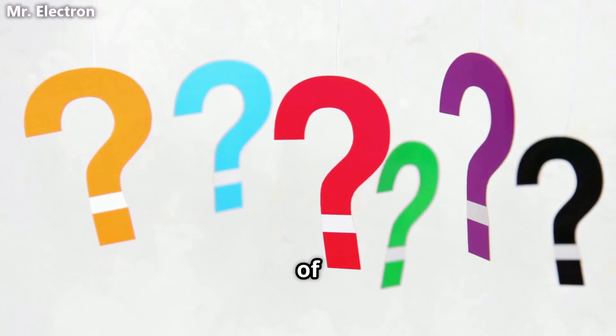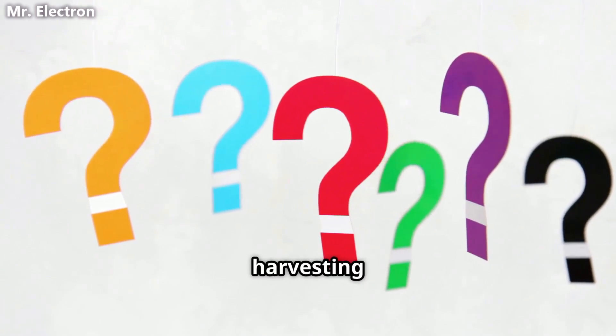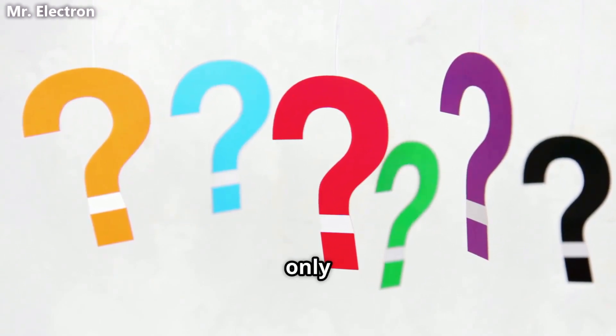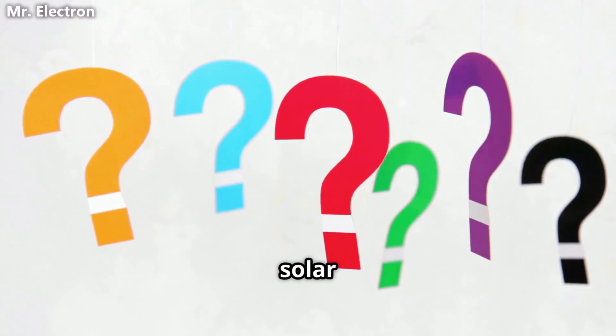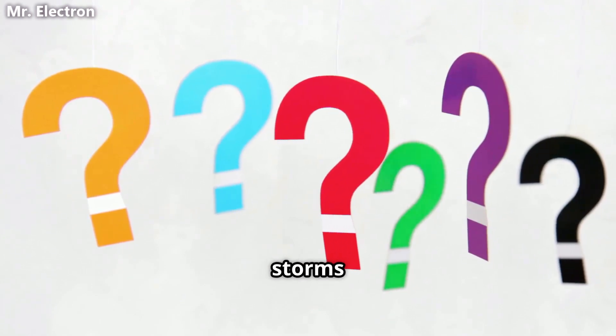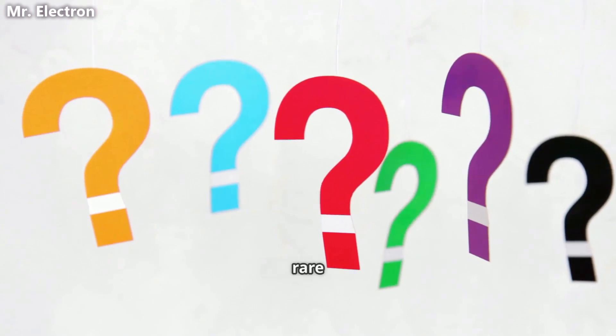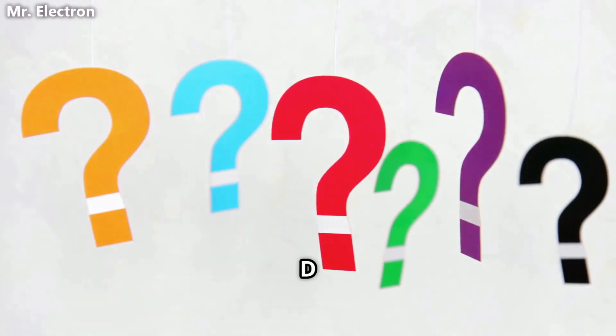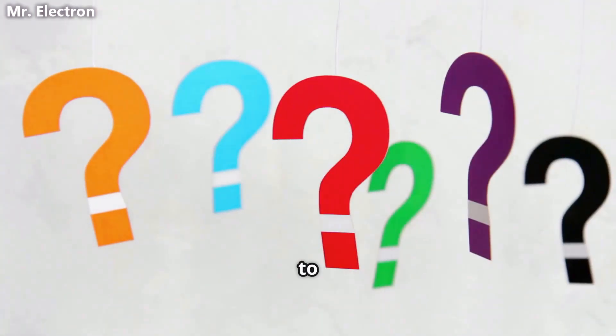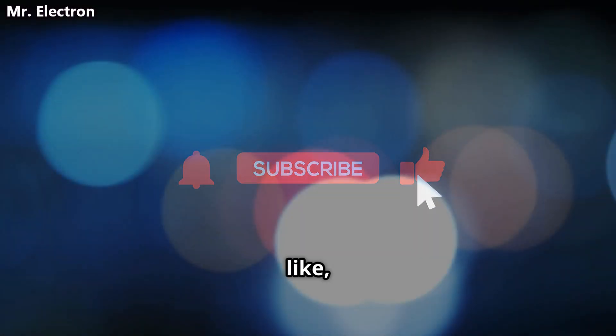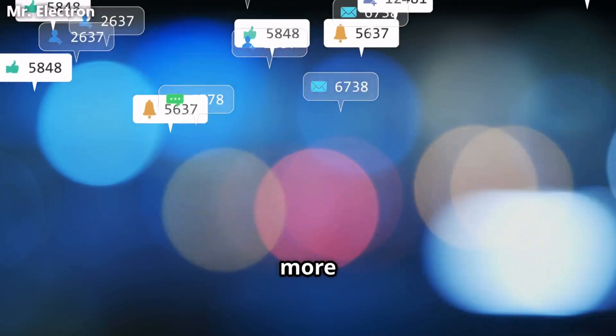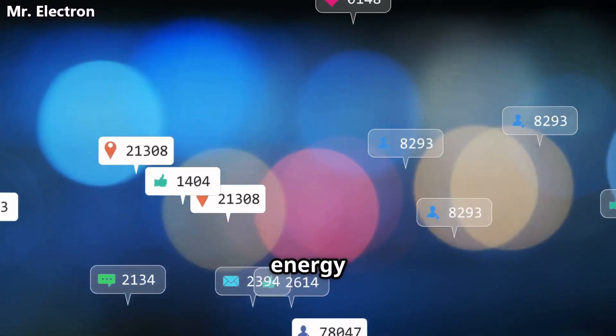Quiz time: Which of the following is a key advantage of lightning energy harvesting in residential buildings? A) It only works during sunny weather, B) It complements solar power during storms, C) It requires rare earth materials, or D) It cannot be connected to the grid. Share your answer in the comments below. If you enjoyed this video, don't forget to like, share, and subscribe for more revolutionary renewable energy content.